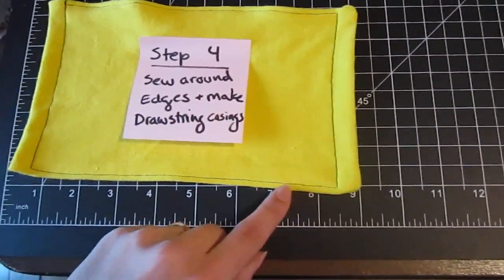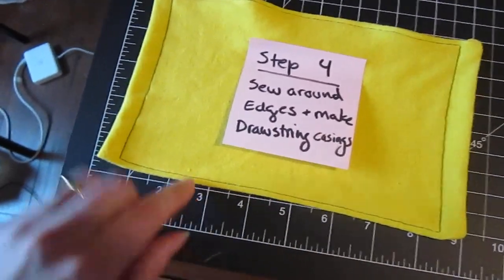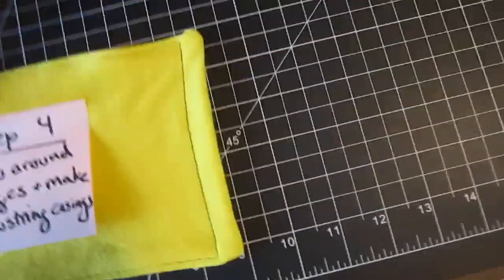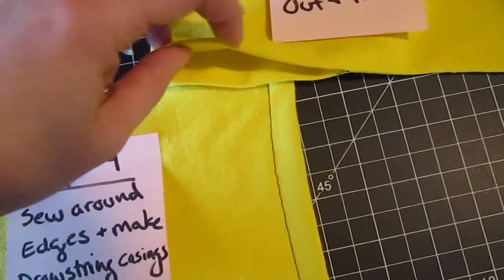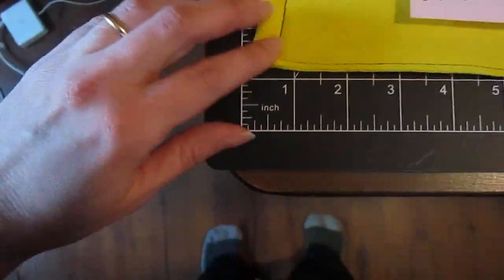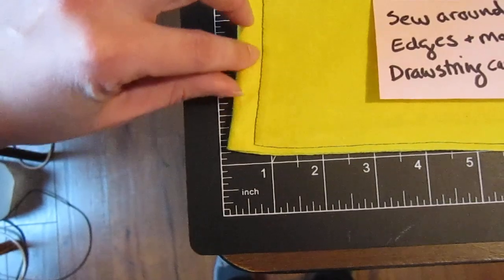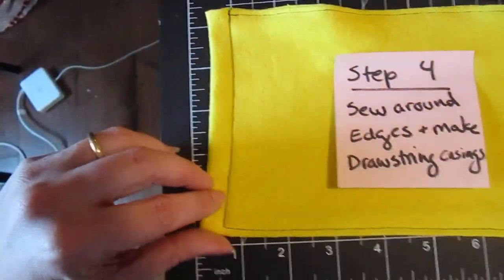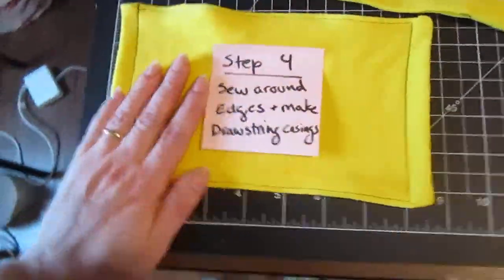Then came down here real close. Sewed an eighth of an inch at the edge again. And then that will help close off that opening that we had down here before. This helps. That edge stitching helps close that off. And then I go up a half an inch away. And then back stitch here. So now I've got casing here. And this is sewn down and that opening is closed.